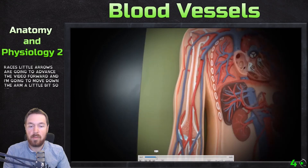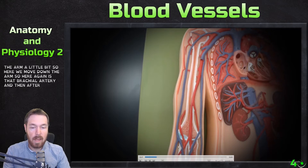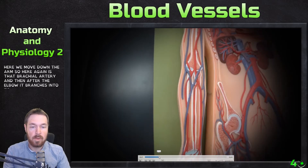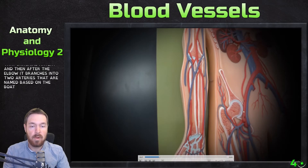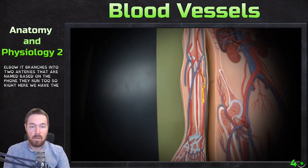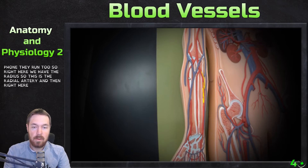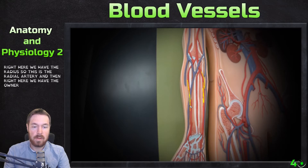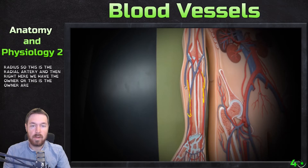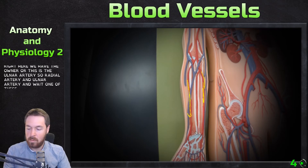Here again is the brachial artery. After the elbow, it branches into two arteries named based on the bone they run along. Right here we have the radius, so this is the radial artery, and right here we have the ulna, so this is the ulnar artery.